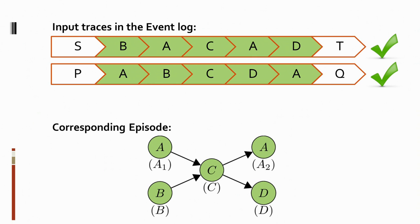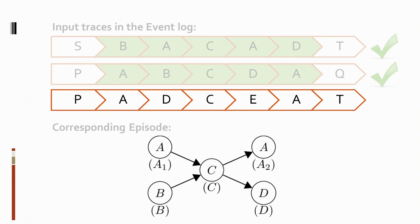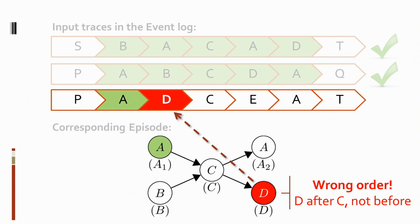Hence, for this first trace, we conclude that this episode occurs in this trace. The same holds for the second trace shown here. Now, what about this third trace? Again, we start by relating nodes to parts of the trace. The first A is matched. However, when we try to relate the D, we encounter that it occurs before a C occurred, violating the partial order of the episode. Hence, we already conclude that this episode does not occur in this trace.